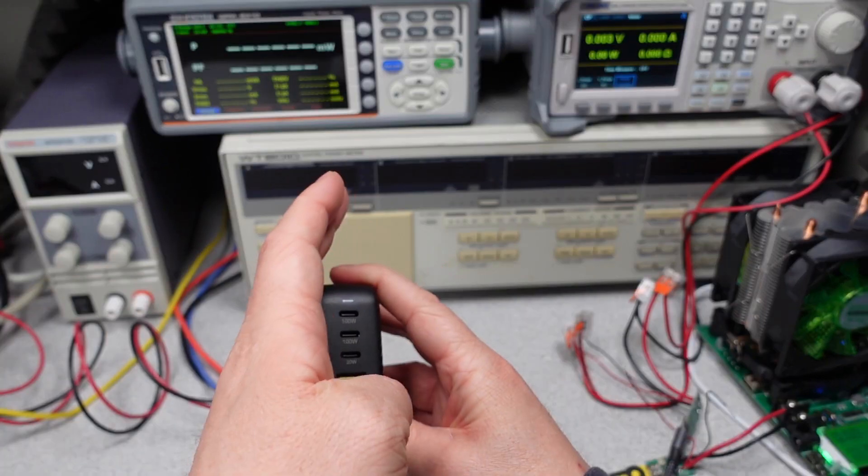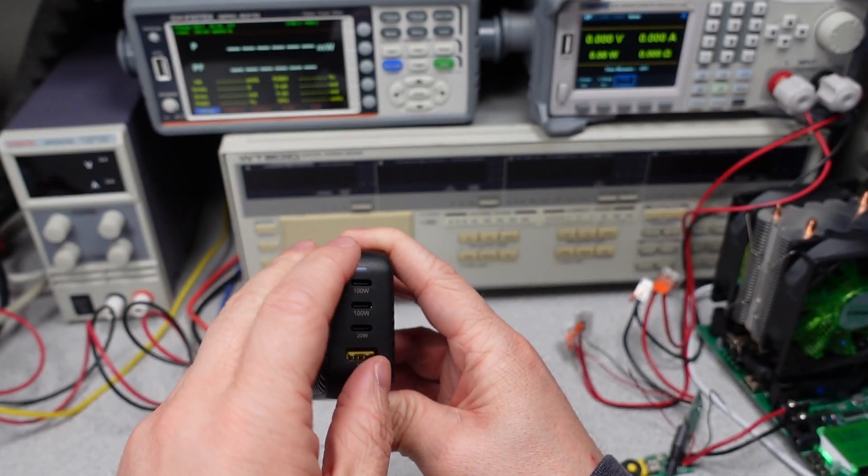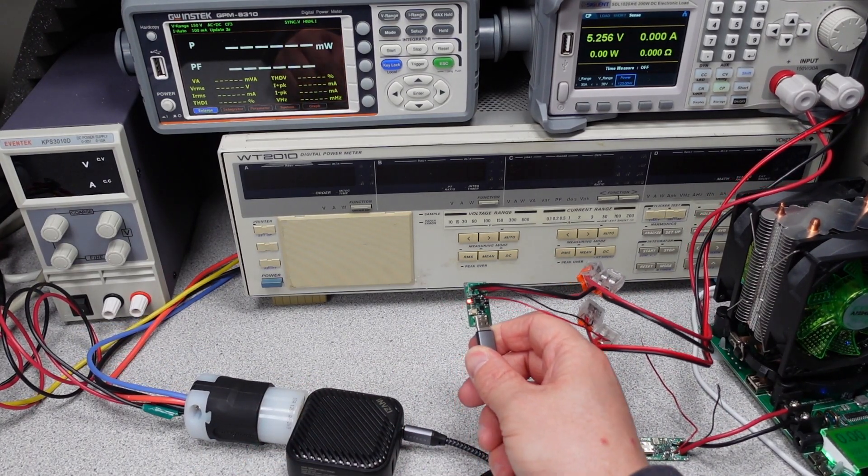Alright, let's go ahead and get it plugged in. So it does have a little LED. It's probably pretty hard to see that, but there is a very, very dimly lit LED right there. So we have a red LED that tells us that we have different modes available.